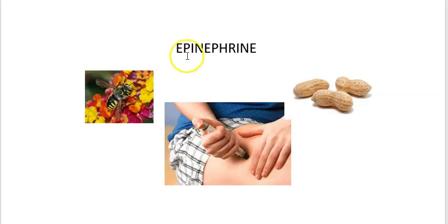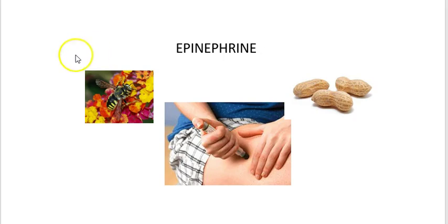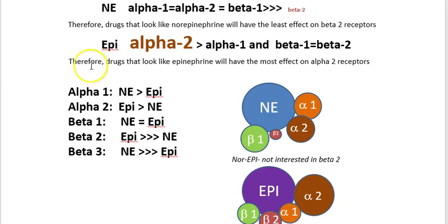In terms of epinephrine as a drug, we can go back to allergy. People that have allergic reactions to bees, flowers, or peanuts often carry an EpiPen. There was plenty of politics involved with the price of the EpiPen in the last year. Epinephrine is a good drug for immune anaphylaxis, but it's also a positive pressor agent working through your alpha-1, beta-2, beta-1, and alpha-2 receptors centrally.